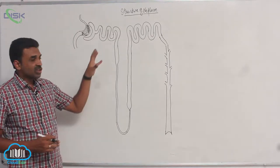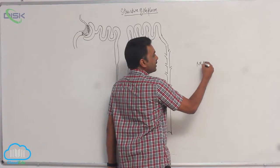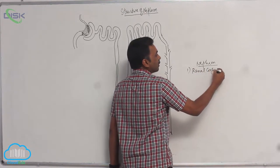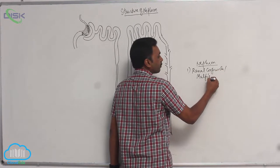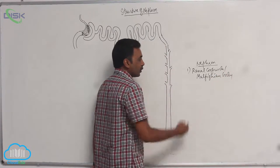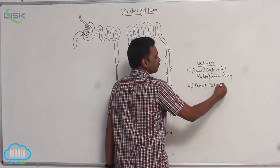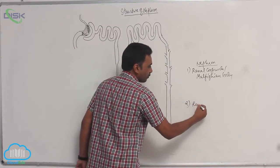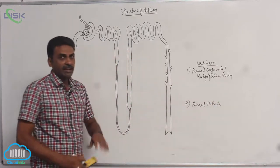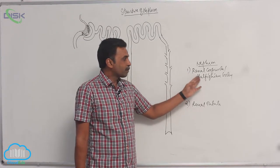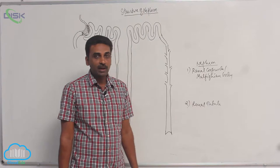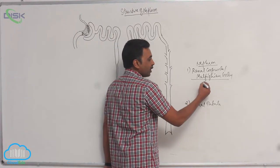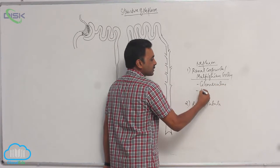A nephron contains two parts: one is the renal corpuscle, also called Malpighian body, and the other is the renal tubule. The renal corpuscle includes two parts: one is the glomerulus and the other is Bowman's capsule.